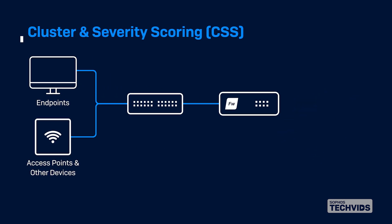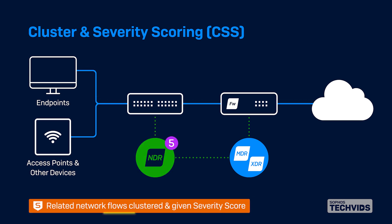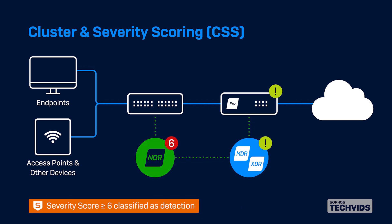Now I'll speak about one other patented process within Sophos NDR known as cluster and severity scoring, or CSS. The CSS algorithm analyzes threats within your traffic over time, then combines risk indicators for related flows and applies contextual logic to more accurately identify malicious activity. Related network flows are clustered and assigned a severity score, and any clusters that score higher than six are classified as a detection and can be quickly investigated.